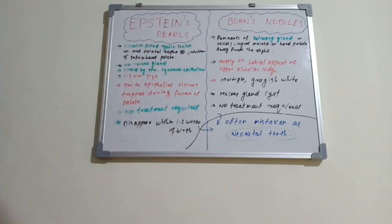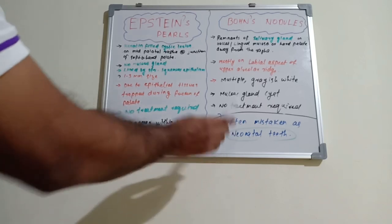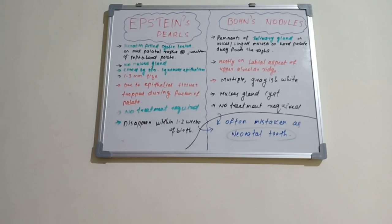It is often mistaken as neonatal teeth. That's all about Epstein pearls and Bohn's nodules, the cystic lesions which are seen within newborns' gum pads, newborns' palates or oral cavity, and often mistaken as neonatal teeth. Neonatal teeth are the teeth which are present within 30 days, and natal teeth are present during birth. So I'll come up with a new session on dentistry. Thank you.